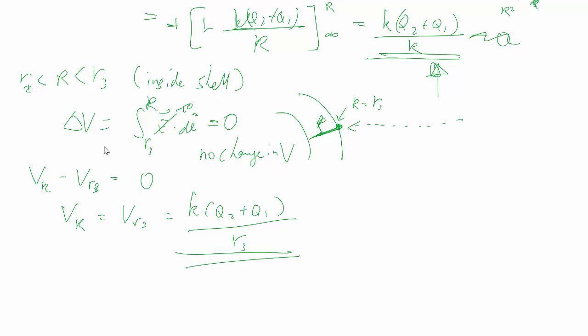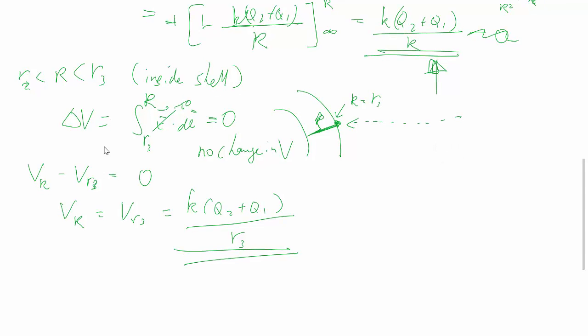So this is the key difference in working out electric field versus potential problems. For potential, you do have to think about we're only getting the change, so we have to go from the outside, usually zero at infinity, and come in. And then work our way step by step inwards.